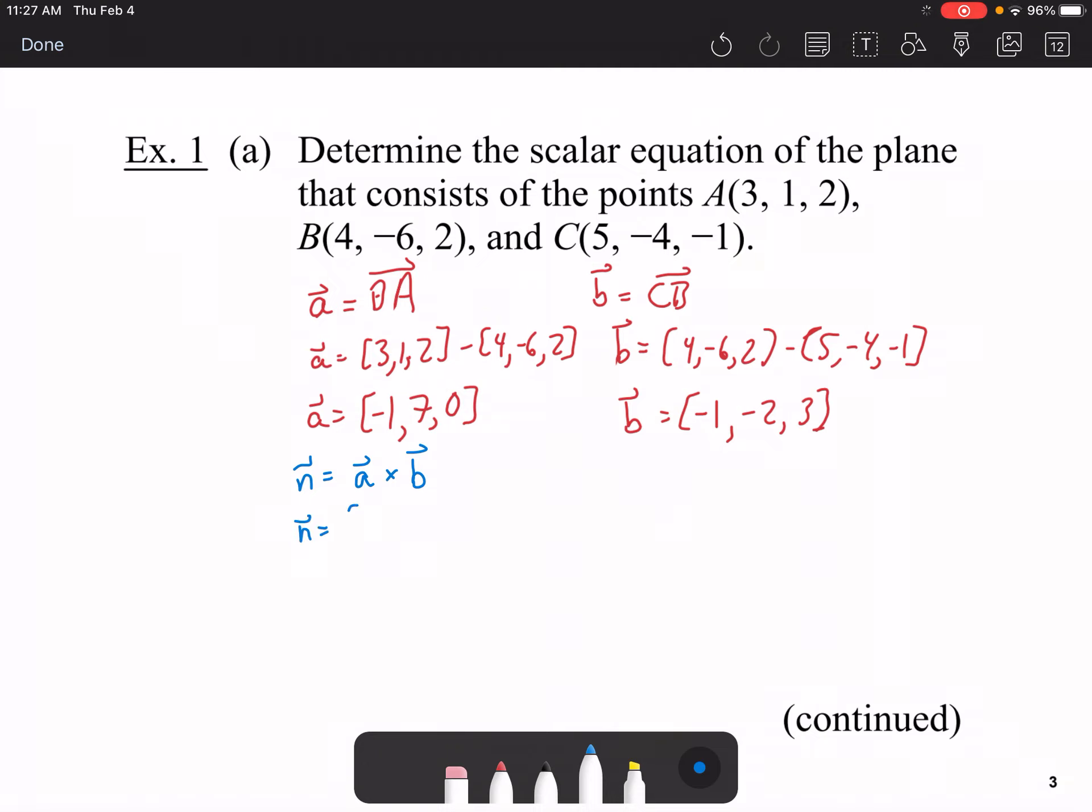So, let's show you how to do that. I'm going to write the values of negative 1, 7, and 0 off to the side here, so that I can work it out. Okay, so here I have 21 minus 0. Here I have 0 minus negative 3. Here I have 2 minus negative 7. So, my normal vector turns out to be 21, positive 3, and 9.